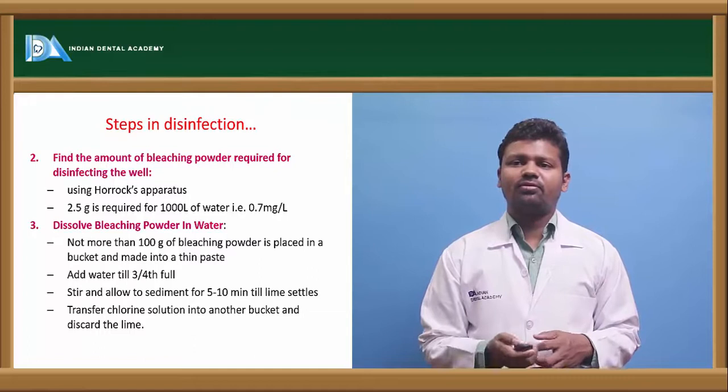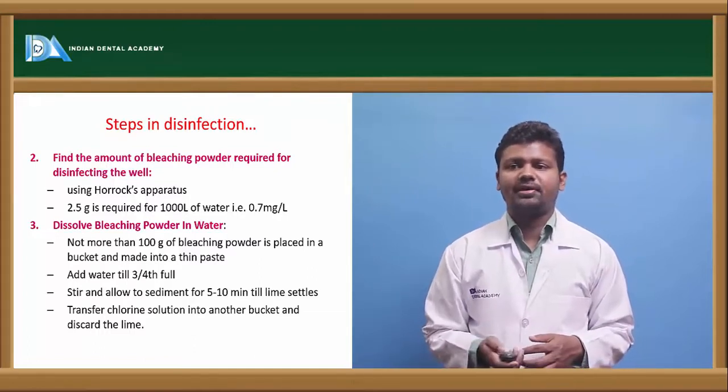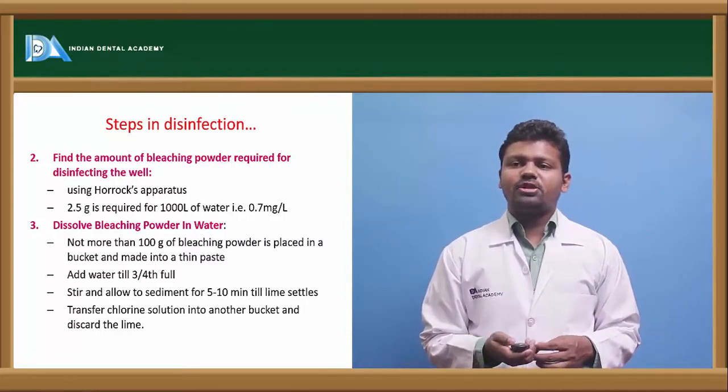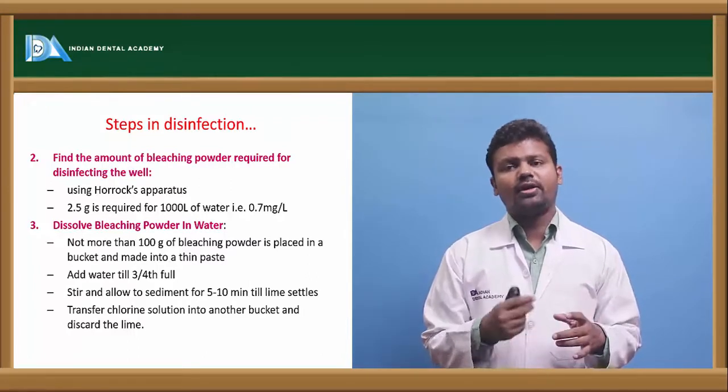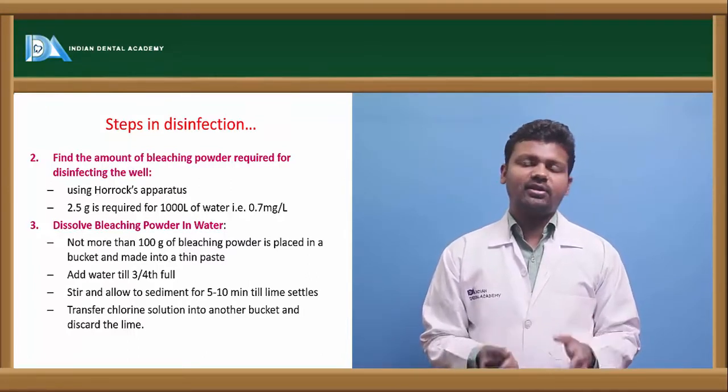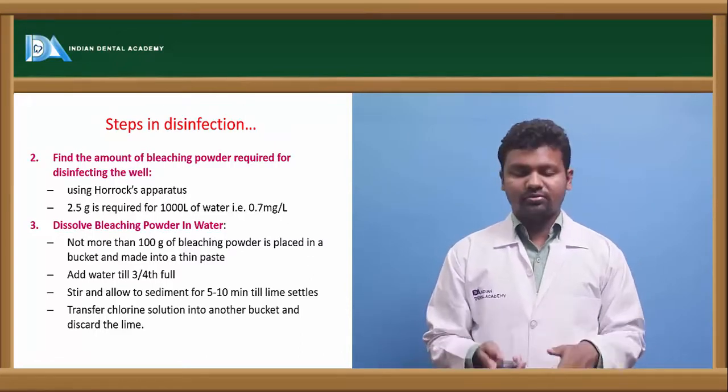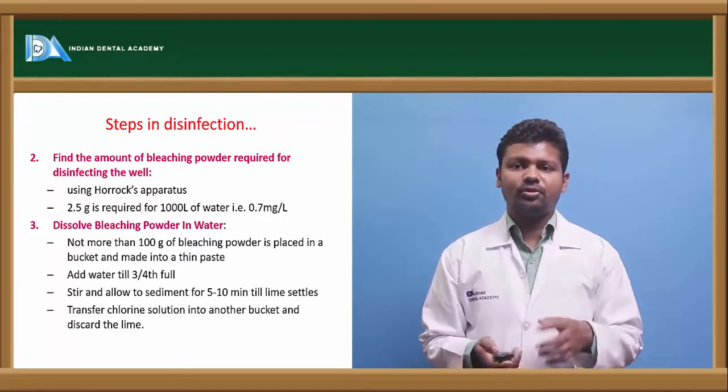Using air-ox apparatus where 2.5 gram is required for 1000 liter of water. Not more than 100 gram of bleaching powder is placed in the bucket. Little bit of water is added, it is made thin and this bucket is placed at the bottom of the well. Slowly the bleaching powder will release and purify the water.